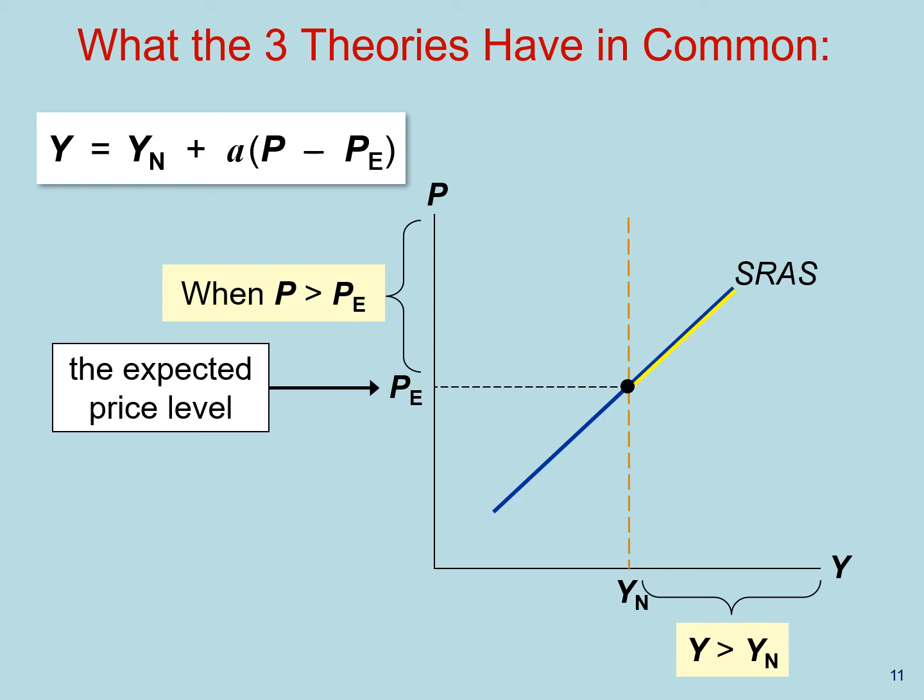When prices are above the expected level of prices, we are in the yellow region. On that part, this difference right here between the price level and expected prices is positive. So we find naturally that the level of short run output is above its natural level.